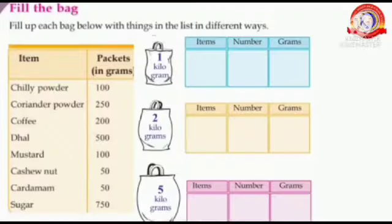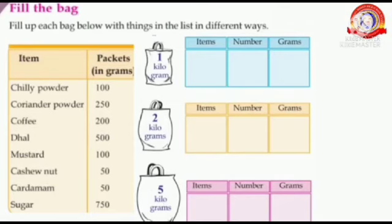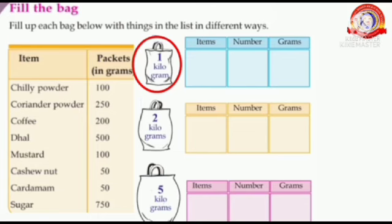Let's start our today's class. The first activity is 'Fill the Bag' — fill up each bag with things from the list in different ways. See the first bag: we have to fill a 1 kilogram bag. In the table you can see grocery items and their weights: chili powder 100g, coriander powder 250g, coffee 200g, dhal 500g, mustard 100g, cashew nut 50g, cardamom 50g, sugar 750g.